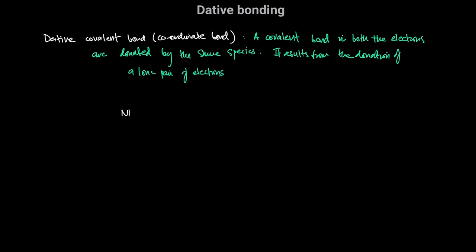Let's look at the example of when ammonia reacts with H⁺ ions in solution to form ammonium ions. The Lewis structure for ammonia has three single bonds and nitrogen has a lone pair of electrons. H⁺, which is a proton, has no electrons. In the ammonium ion there are four bonds between nitrogen and hydrogen. This bond forms when the nitrogen atom donates its lone pair to form a single bond with hydrogen.